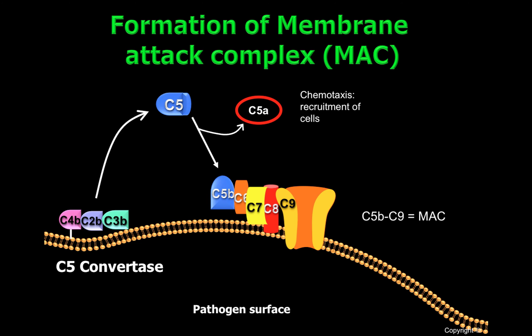This complex, C5B-C9, is called MAC, or membrane attack complex. When the membrane attack complex is formed, pathogens will be lysed. And in certain circumstances, MAC can lyse host cells, causing damage to the host.